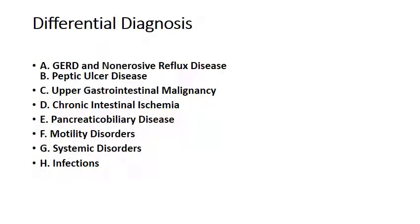Differential diagnosis: functional dyspepsia should be differentiated from the following. First, GERD — should be considered when the predominant symptoms are regurgitation, sub-sternal burning, and acid taste, diagnosed by endoscopy or 24-hour pH monitoring. Second, peptic ulcer disease — one of the most common diseases to differentiate from dyspepsia. About 15% of patients with dyspeptic symptoms have gastric or duodenal ulcer diagnosed by endoscopy. Other causes to consider include use of NSAIDs and H. pylori infection.